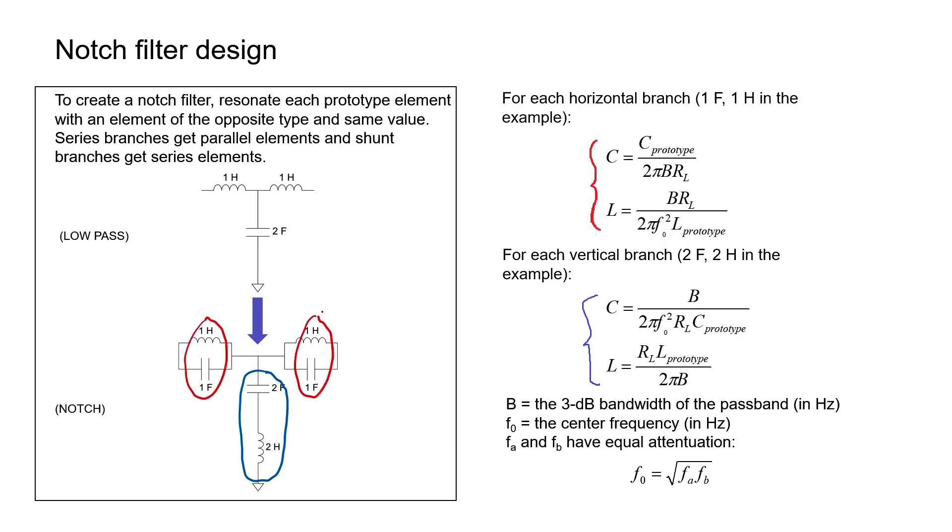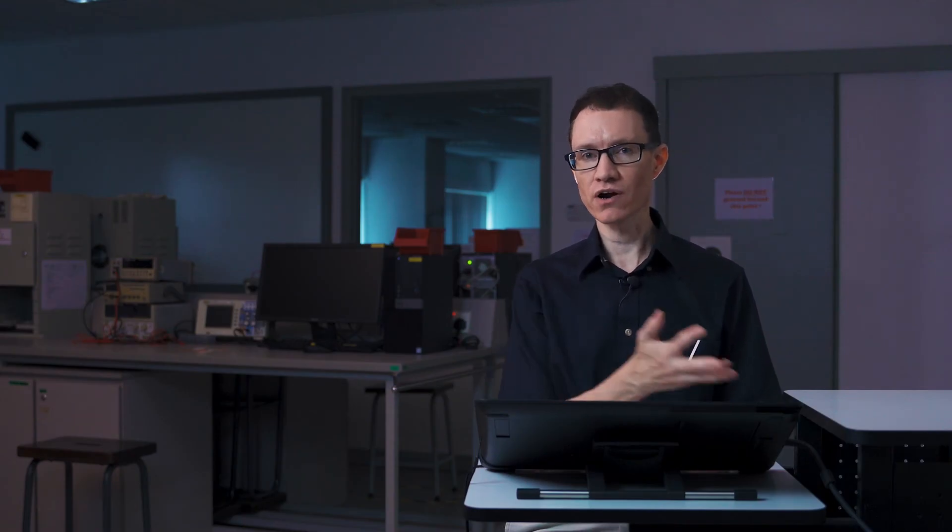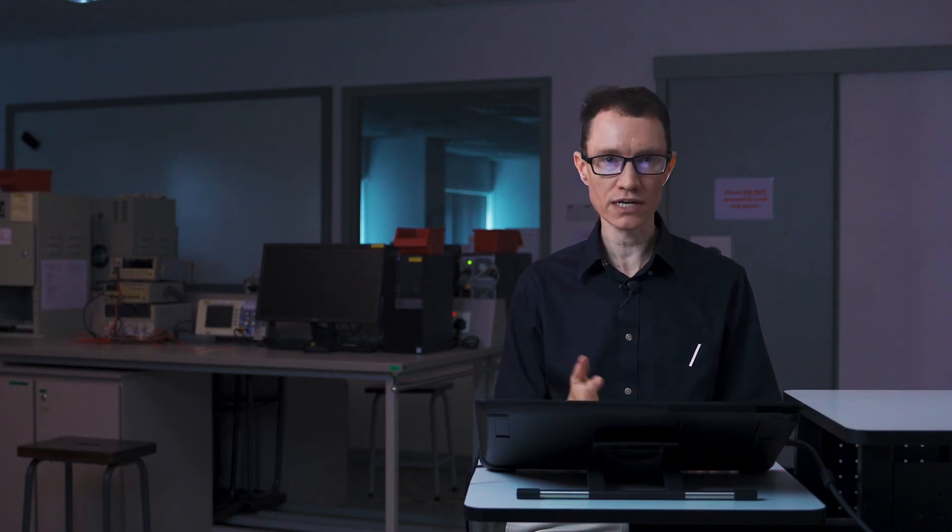You might have noticed that with all these different types of Butterworth filters, I always assumed that the load impedance matched the source impedance — that is, R_L equals R_S. Of course, that's not always going to be the case in an actual circuit. In the next video, I'll look at ways to handle realistic situations where the load impedance is not matched to the source impedance.